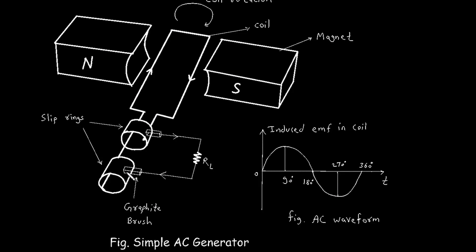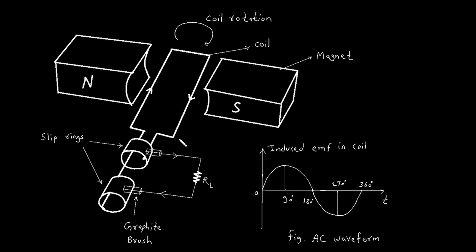Fourth, graphite brushes. These are stationary conductors that press against the slip rings, allowing electrical contact without hindering the rotation of the coil. Together, these components make up the AC generator.